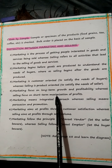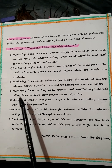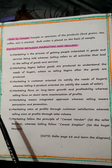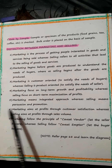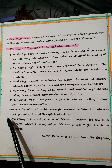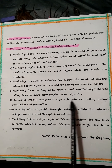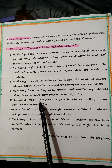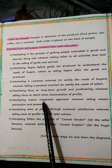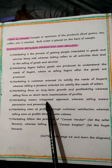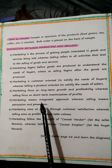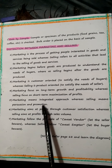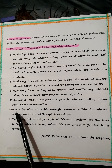Fourth point: marketing focuses on long-term growth and profitability, whereas selling focuses on short-term maximization of profit. Without profitability you cannot maximize profits, so there must be growth and expansion of business — all of that happens through marketing. Fifth point: marketing means an integrated approach, whereas selling means persuasion and promotion. Integrated means combining and linking together various aspects of selling — putting together various aspects to sell a product.